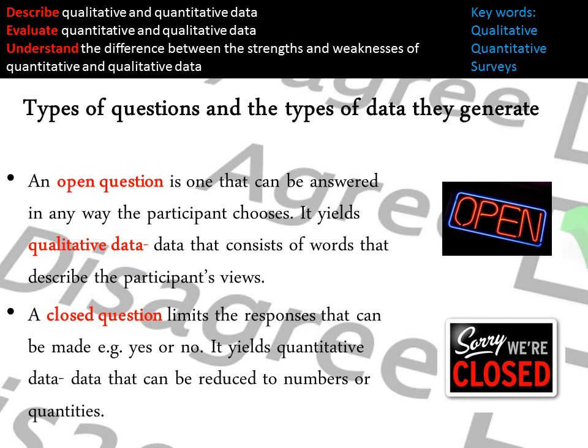An open question is one that can be answered in any way the participant chooses, and that gains qualitative — quality, in-depth, rich — data. A closed question is one that limits the response that can be made, such as a yes/no answer, and that will give you quantitative, which is numerical data.